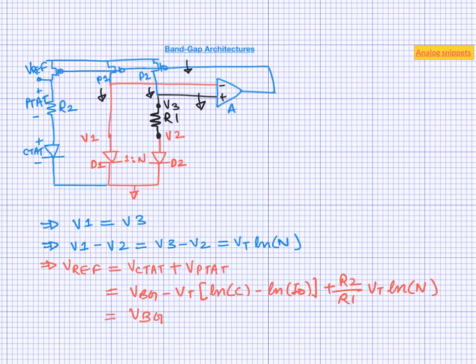Vref is the sum of Vctat and Vptat. We have designed the PTAT voltage such that its slope exactly cancels the CTAT voltage slope, and we are left with Vbg, which is approximately the silicon bandgap voltage — approximately 1.2 volts.